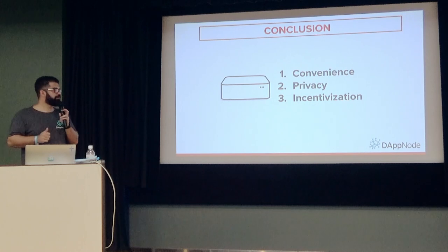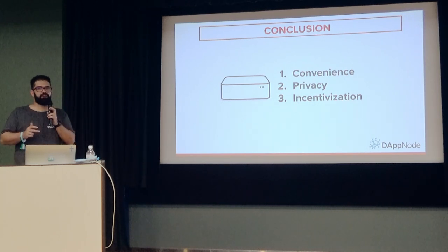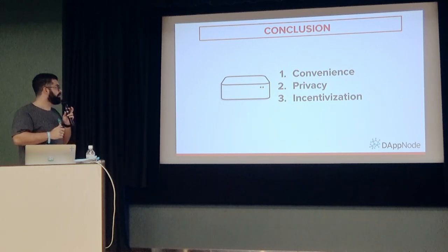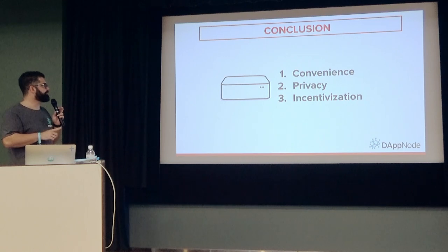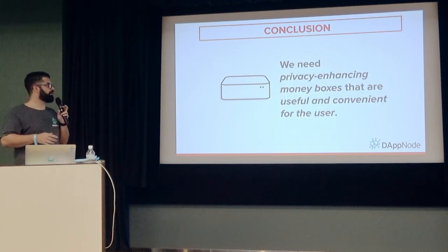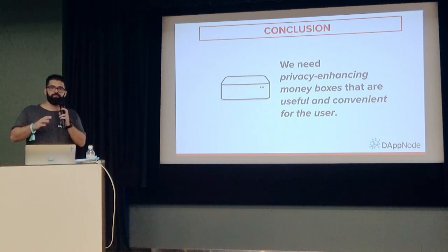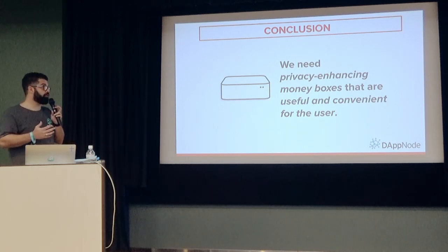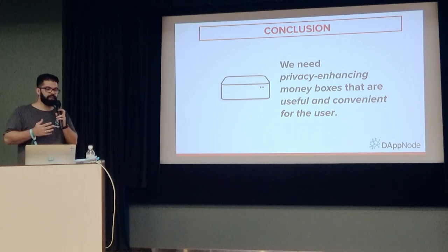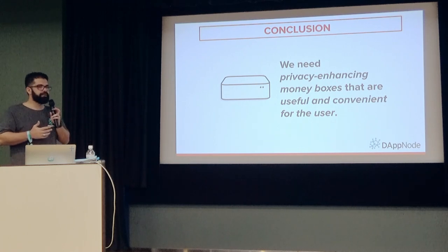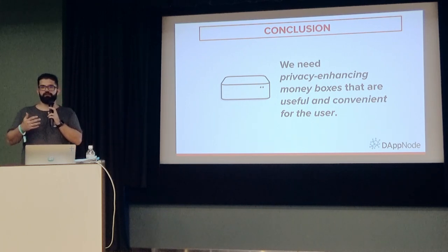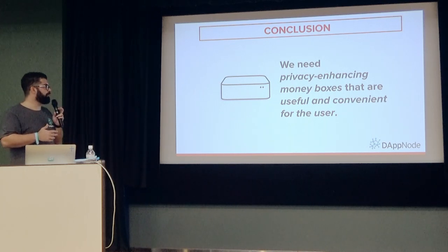The conclusion is we need to put these three pieces together: we need to make it convenient, take care of privacy, and have an incentivization model — all in the same place. We can summarize this in one sentence: we need privacy-enhancing money boxes that are useful and convenient for users. If we put all this together, we make a really convenient solution. It's a way to achieve — maybe not massive adoption — but at least getting people to start using and understanding these new technologies, helping to drive more adoption.